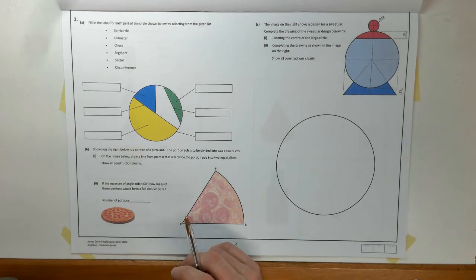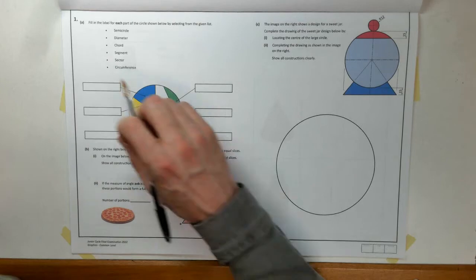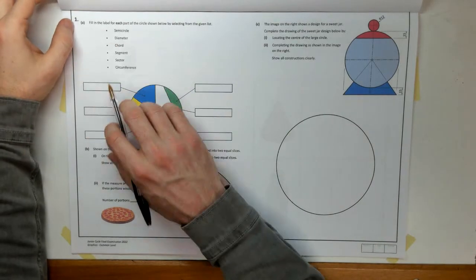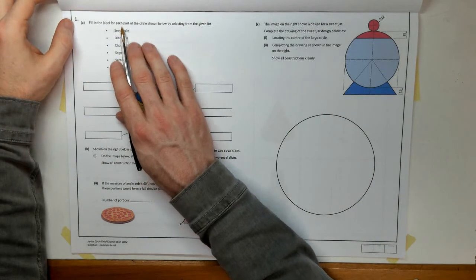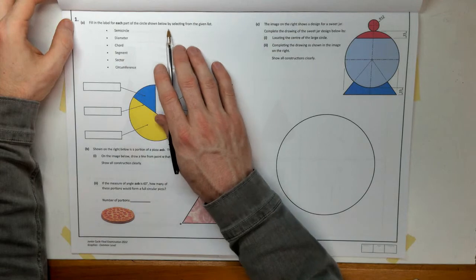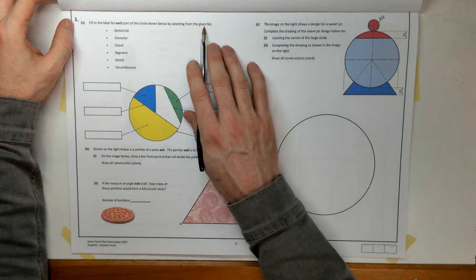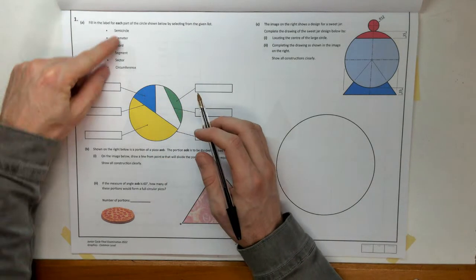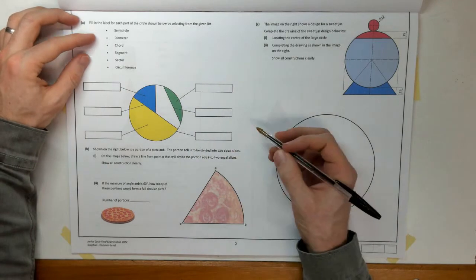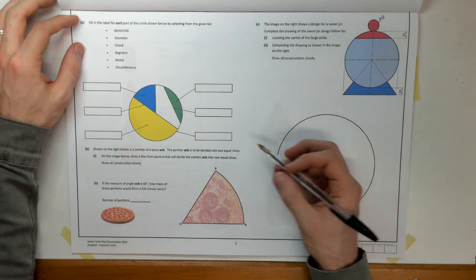So welcome to the 2022 graphics paper. This is question 1. So part A. Fill in the label for each part of the circle shown below by selecting from the given list.